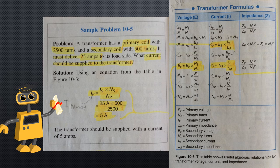Sample problem 10-5: A transformer has a primary coil with 2500 turns and a secondary coil with 500 turns, and must deliver 25 amps to the load side. What current should be supplied to the transformer? Using the equation for IP from table 10-3: IP = IS × NS ÷ NP = 25 × 500 ÷ 2500 = 5 amps. The transformer should be supplied with a current of 5 amps.